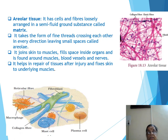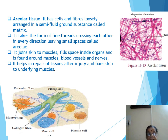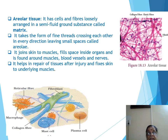Areolar connective tissue also contains plasma cells, mast cells — which refer to a substance called heparin that inhibits blood coagulation — macrophages, and reticular fibers (also called yellow fiber and white fiber). These components can be observed in the labeled diagram.